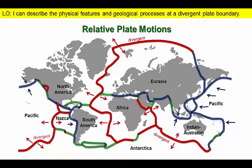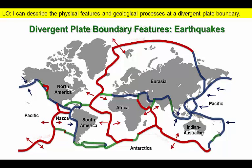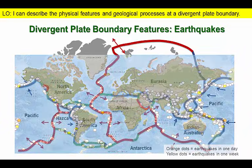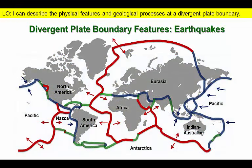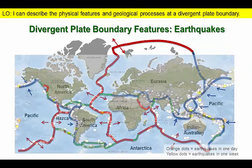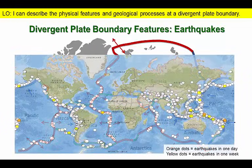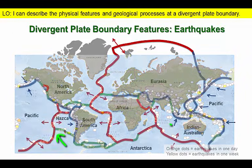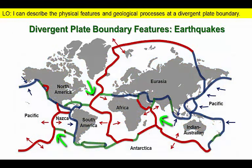Plates move away from each other along divergent boundaries, as shown by the red lines on this map. We can find examples of these boundaries in every major ocean basin. This map shows the locations of hundreds of moderate to large earthquakes that occurred in a single year. Note that there are discontinuous lines of shallow earthquakes associated with divergent boundaries in the Pacific, Indian, and Atlantic oceans.